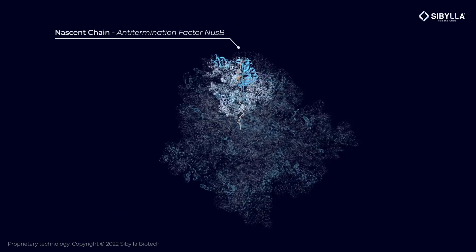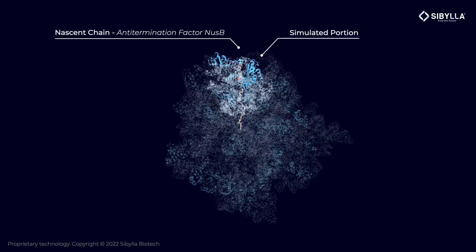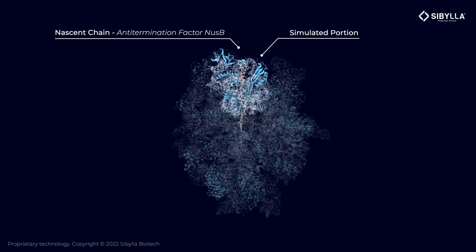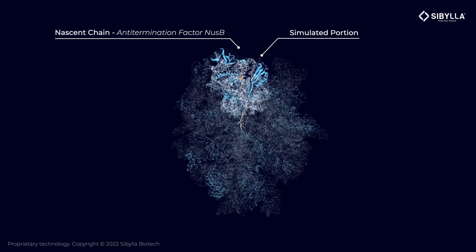Simulating the entire ribosome is inefficient. We achieve better performance by including only the sub-portion that captures all the relevant interactions with the nascent chain.